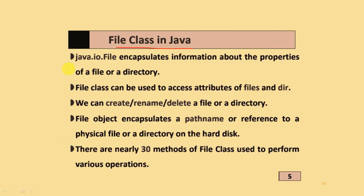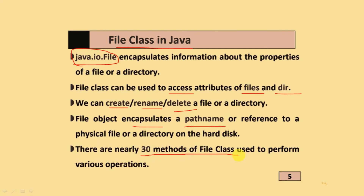The File Class in Java is java.io.File. It encapsulates information about the properties of a file or directory. The File class can be used to access attributes of files and directories — we can create, rename, or delete a file or directory. File objects encapsulate a path name or reference to a physical file or directory on the hard disk. There are nearly 30 methods in the File class used to perform various operations.